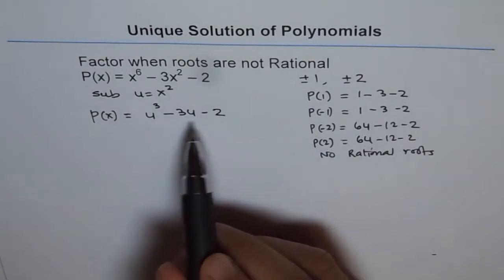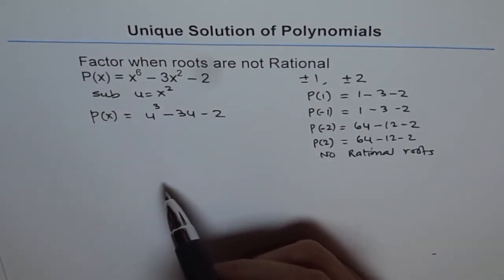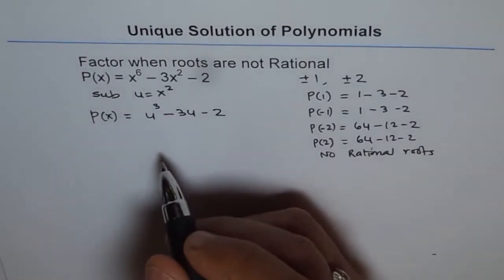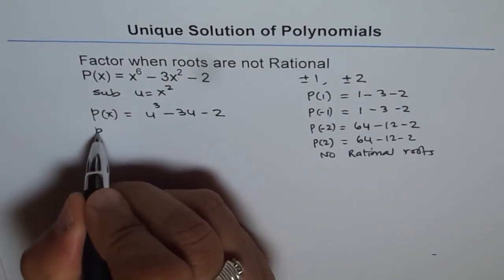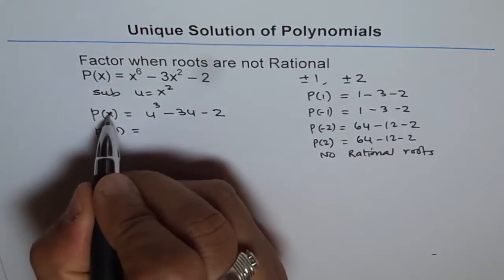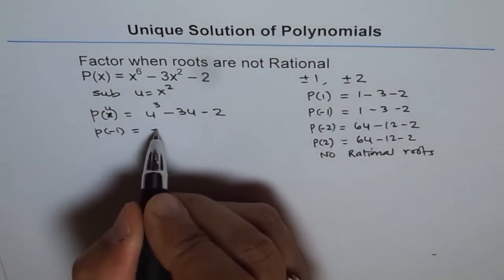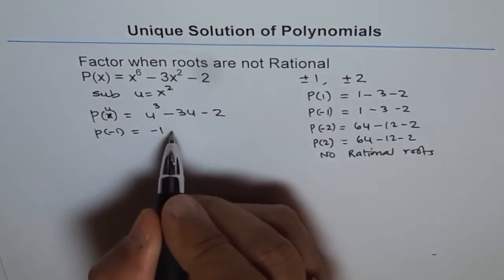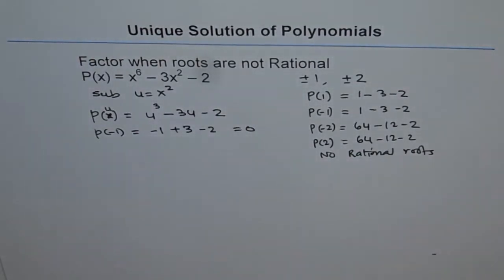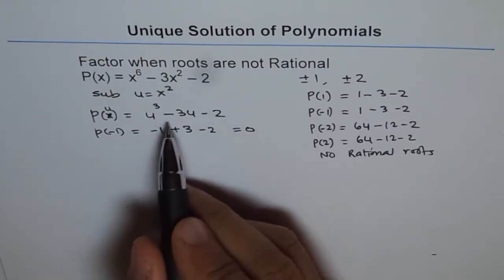Now let's again try the different rational roots for this equation in u. The possibilities are plus or minus 1 and plus or minus 2. If we try p(u) at u = minus 1: minus 1 cubed is minus 1, minus 1 times minus 3 is plus 3, minus 2, which equals 0. So u = minus 1 is a root, meaning (u + 1) is a factor.